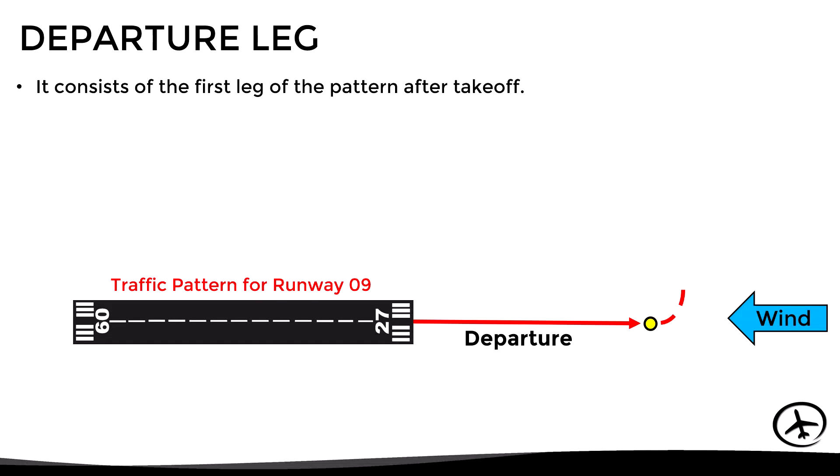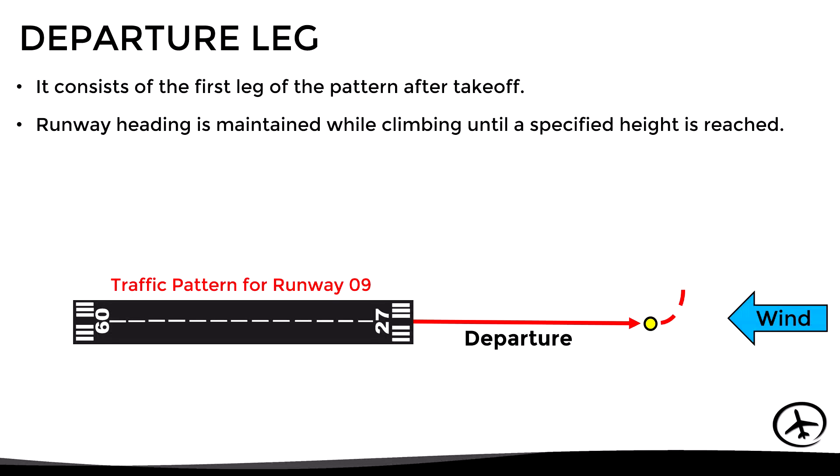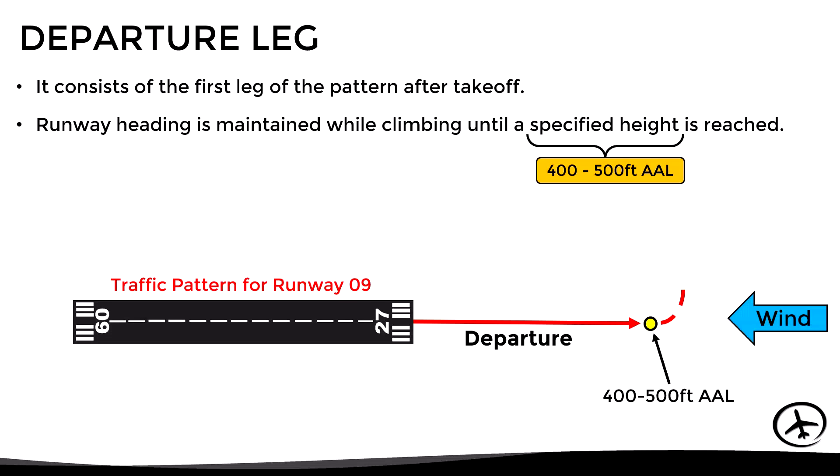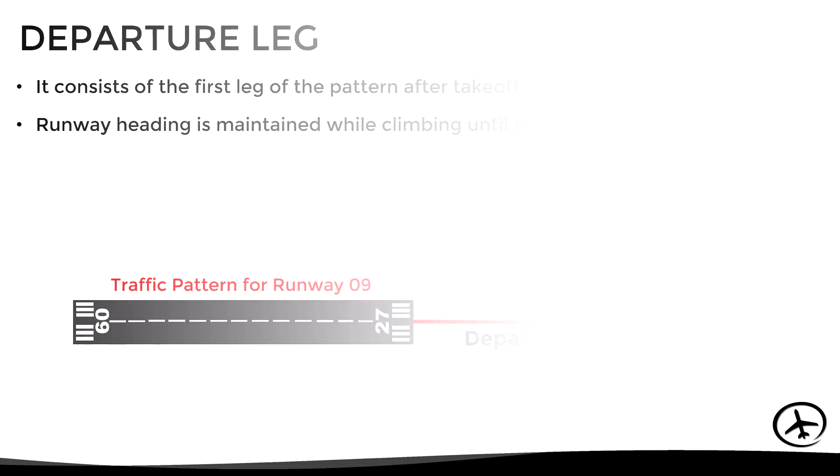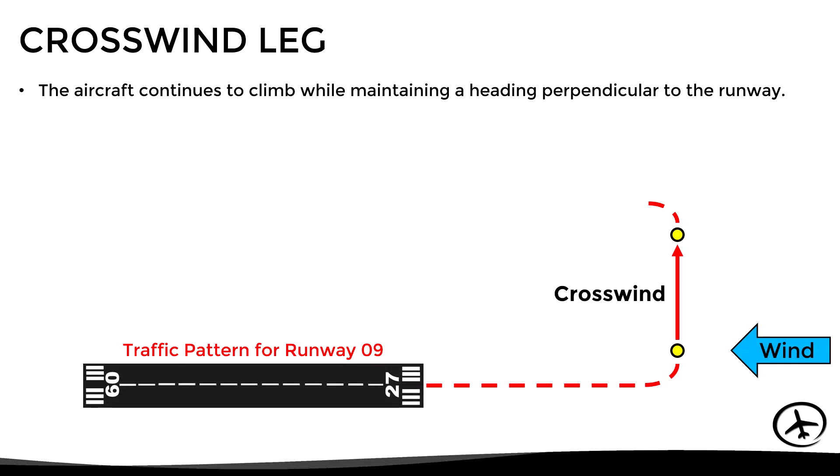The main objective of the departure leg is to gain altitude before making any turn or maneuver. The runway heading is maintained until a specified height above the airport level is reached. This height is normally between 400 and 500 feet, but it may vary depending on different factors such as the aircraft type, terrain, and obstacles.